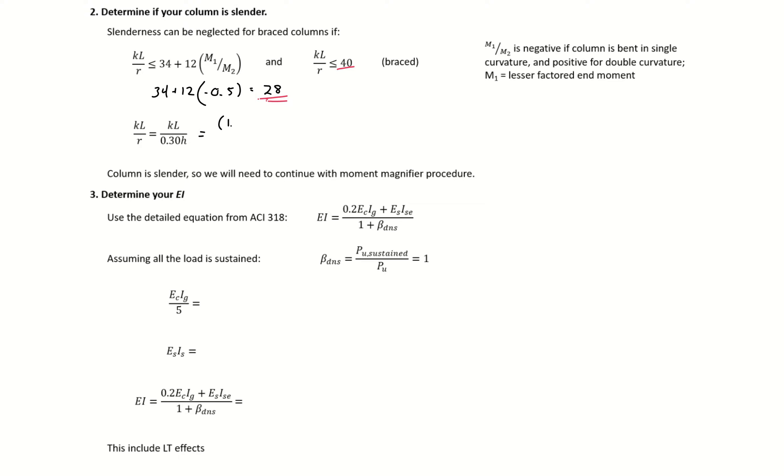Our K is 1 for a simply supported column. Our L is 20 feet times 12 inches per foot, and then divide by our R, which for a rectangular section is just 0.3 times H, which is 20 inches.